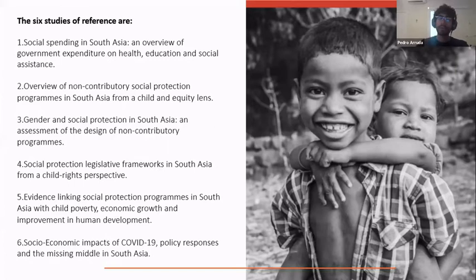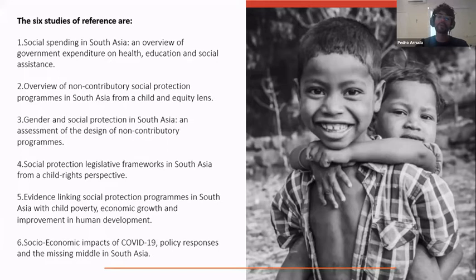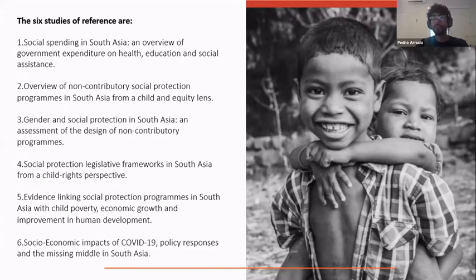You can see a list of the six core papers we have produced as part of this collaboration. Five of them discuss social protection features of South Asia before the COVID crisis — specifically social expenditure profiles, overall design features of flagship programs, how child and gender sensitive they are, the prevailing legal framework for child protection, and the core findings of impact evaluations. In addition, there is a sixth paper discussing COVID-responsive measures adopted in the region.